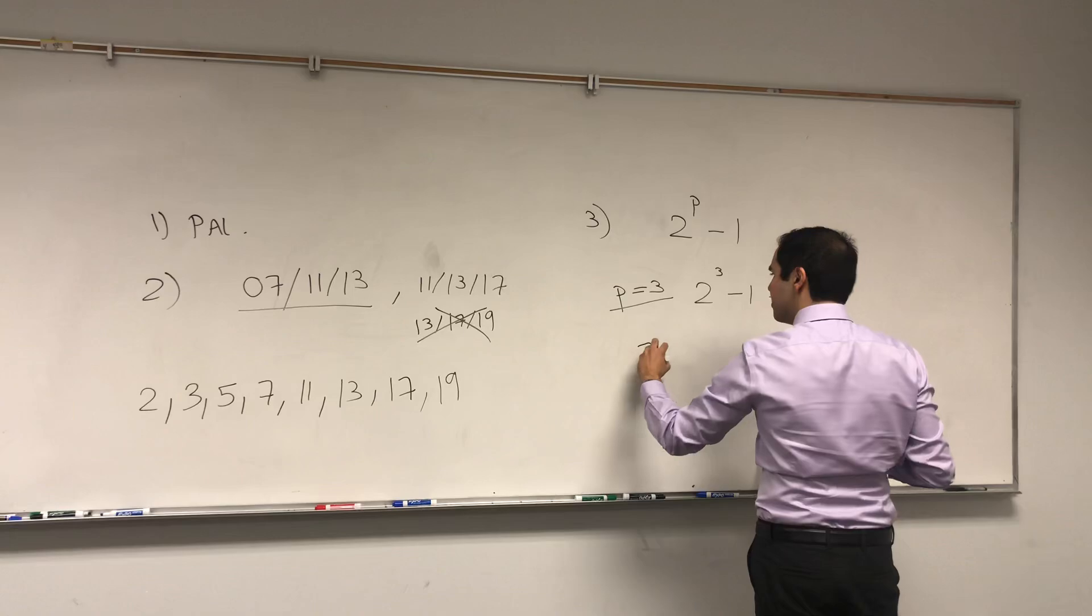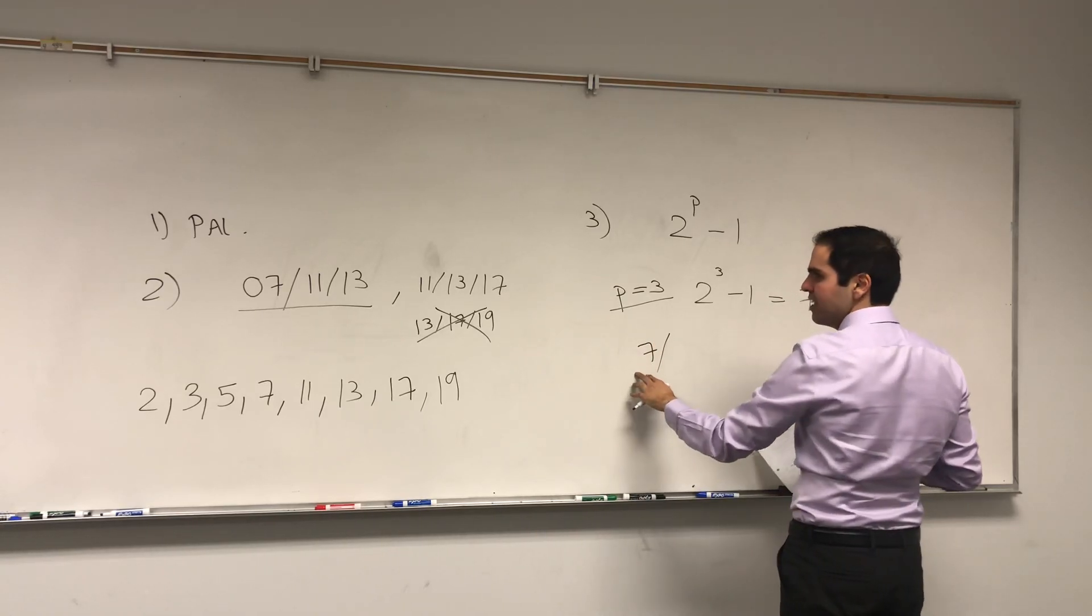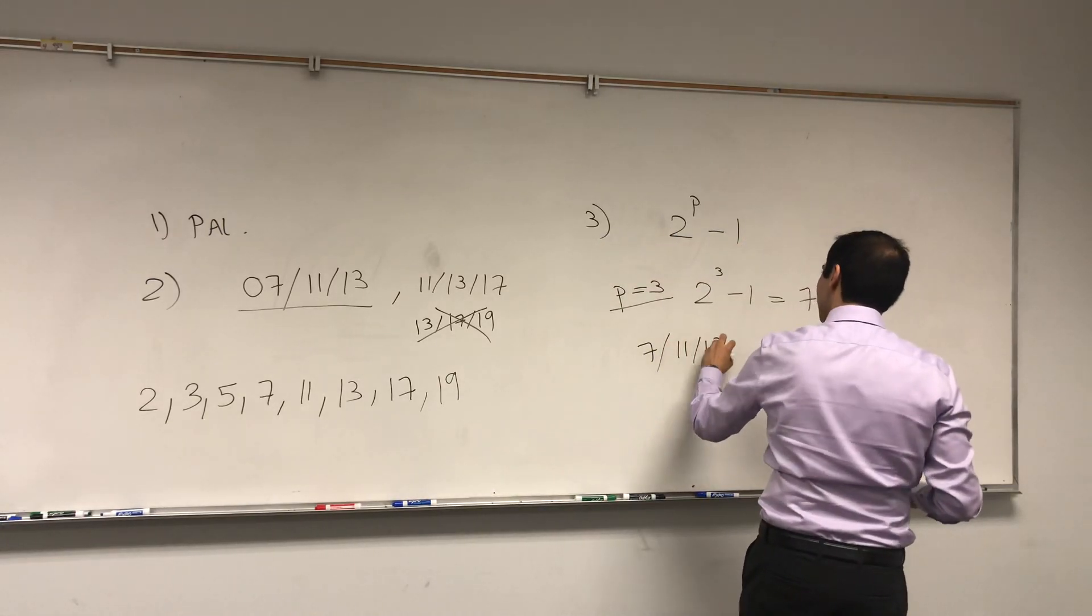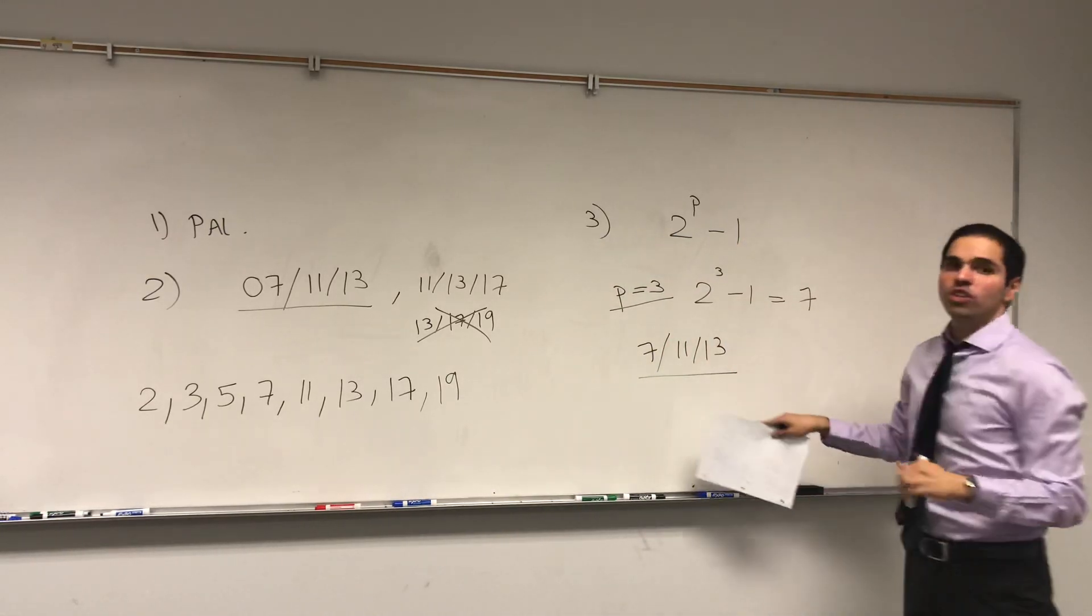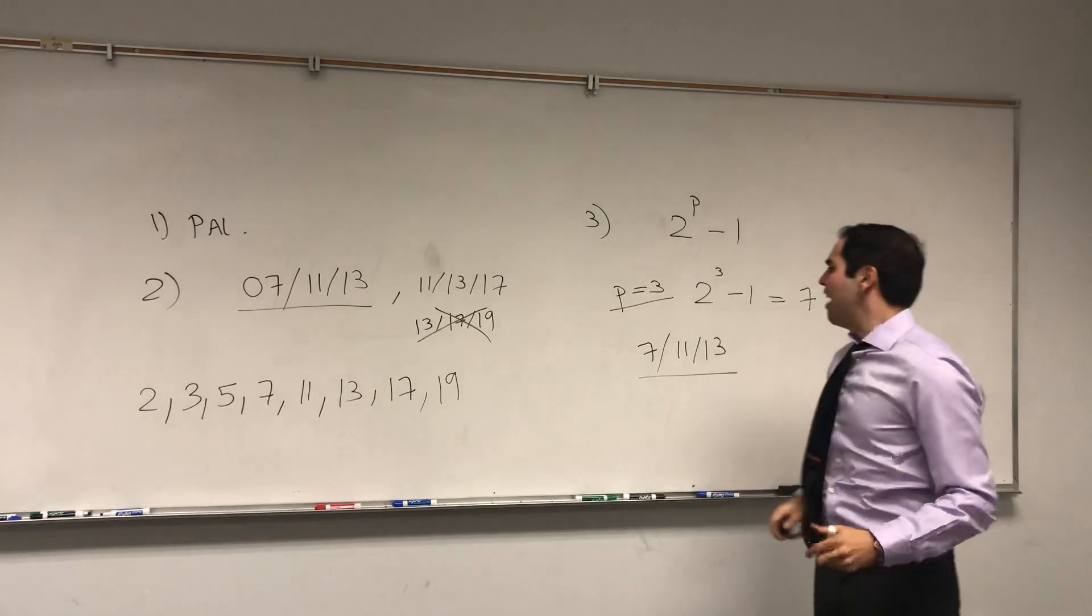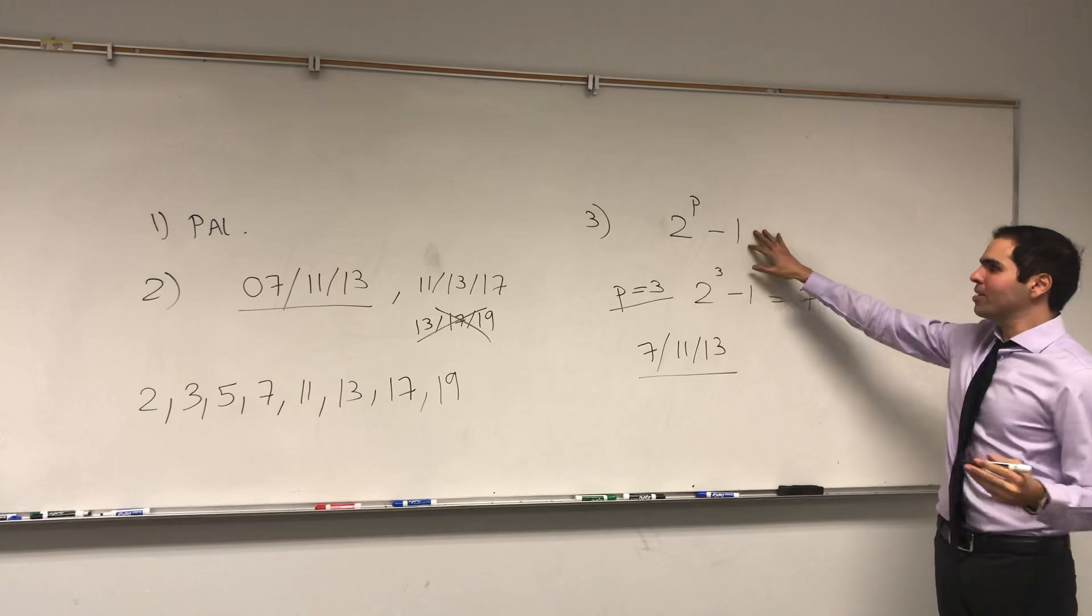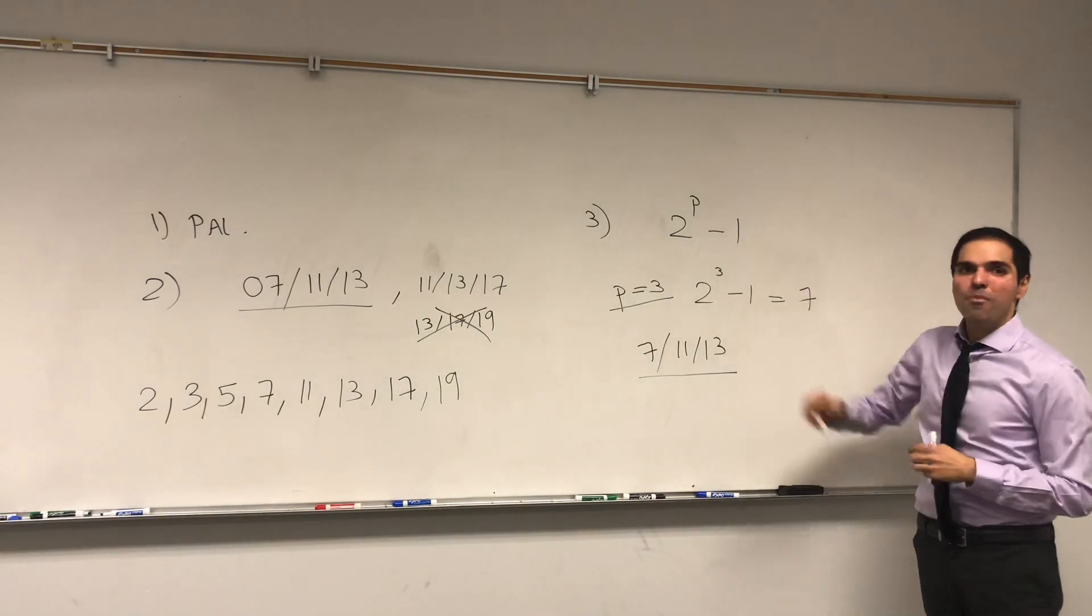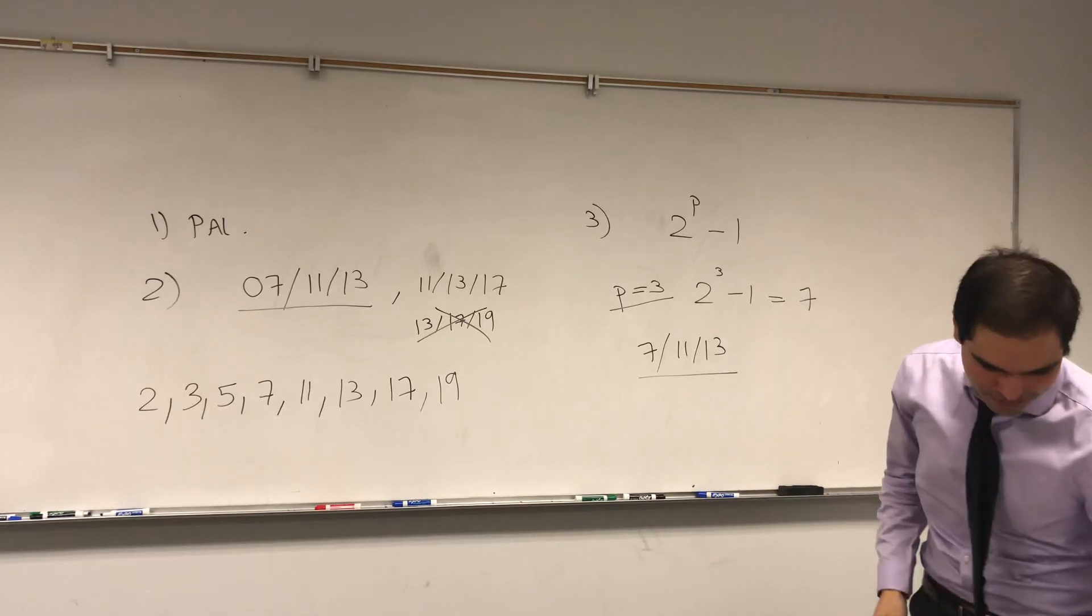So for instance, 7, you start with Mersenne, and then you look at the other prime numbers, let's say 11 and 13. That one was an extra special year, because it was a Mersenne prime year. And that's also very important if you do cryptography. So lots of secret codes are based on those Mersenne prime numbers.